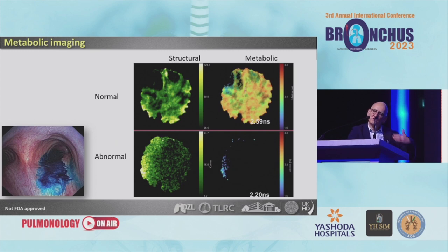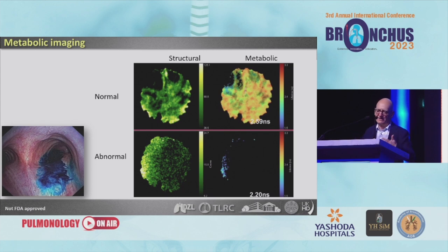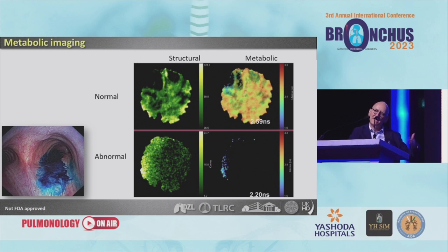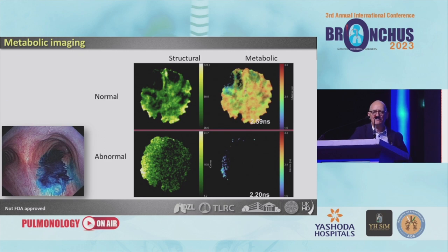We are also starting to stain the airways. Normally with our scope we go for structural analysis — you look and based on experience you can say the mucosa is abnormal or normal. But when you combine your visual information with metabolic information at the same procedure, we may be able to more precisely detect what is abnormal, and maybe take biopsies really from the spot we want to have the material from.